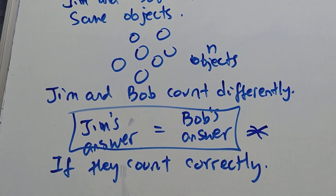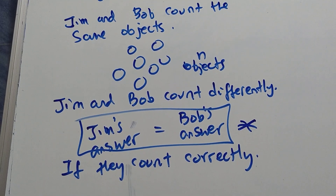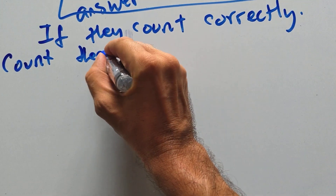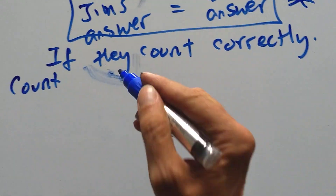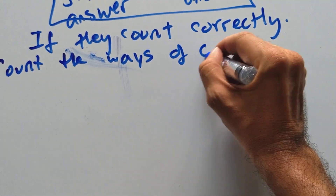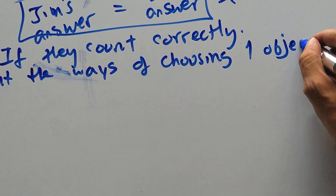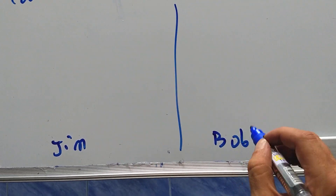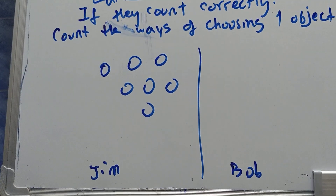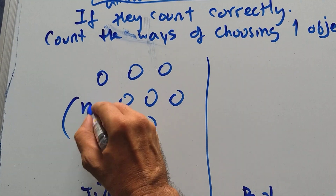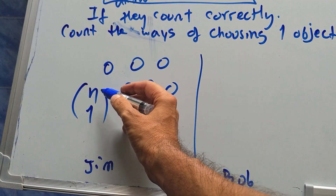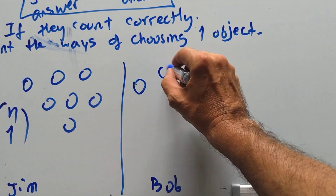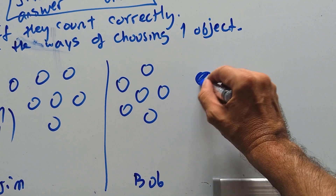Jim and Bob count differently and end up with some kind of equation or identity — that's the technique for proving identities. So let's start with n objects and count the ways of choosing one object from this pile. Jim has a very easy way: he just uses the binomial coefficient n choose 1.